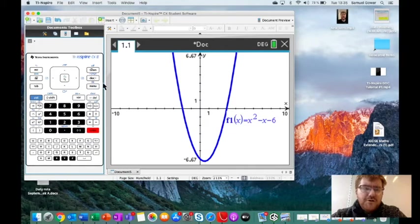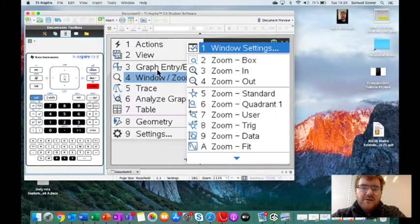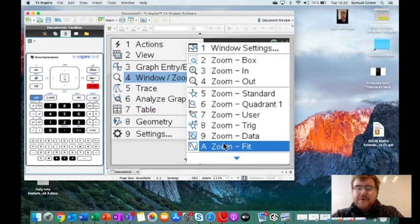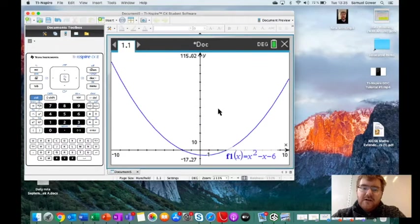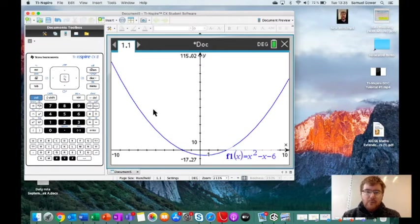If you do not see the actual graph itself on your diagram, what you can do is go to Menu, Window, Zoom, and Zoom Fit is one of the best functions on the TI-Nspire compared to some other calculators. This will then allow the graph to actually change its axis so you can see this particular graph in more detail.